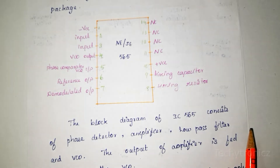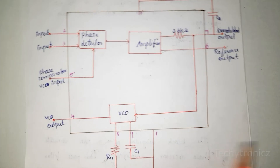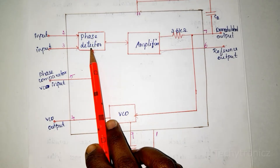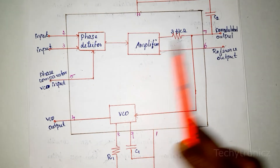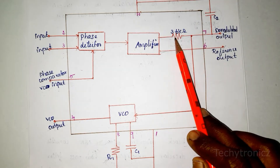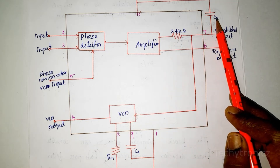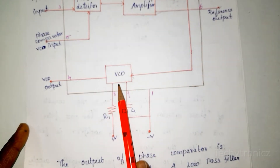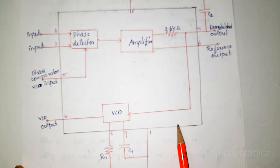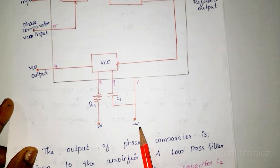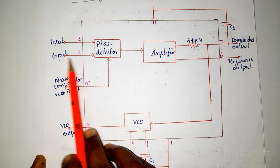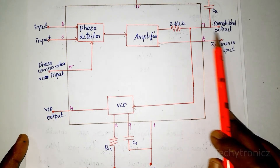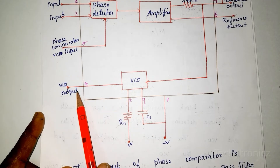Now let us see the block diagram of monolithic PLL. This block diagram consists of a phase detector which acts as the phase comparator and amplifier, a low pass filter — that is the combination of resistance 3.6 kilo ohm and capacitance C2. The output of the amplifier is fed back to the VCO. In this block diagram, pin number 10 and 1 are positive and negative power supply. Pin number 2 and 3 are inputs for the phase detector. Pin number 6 is reference output and pin number 7 is demodulated output. Pin number 4 is VCO output.